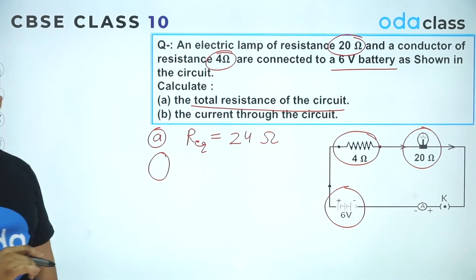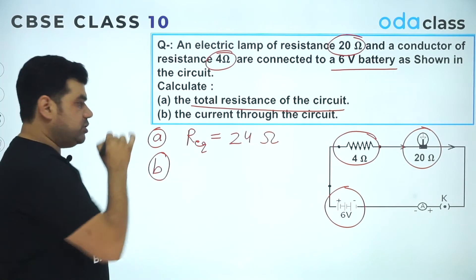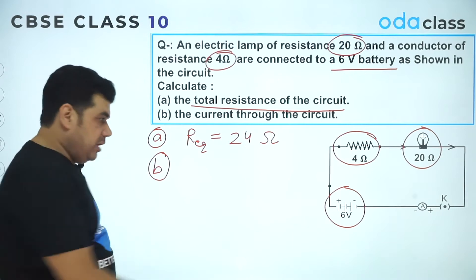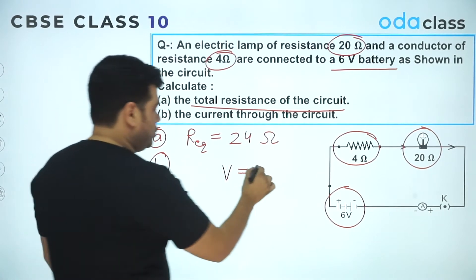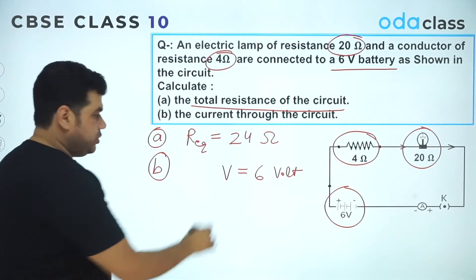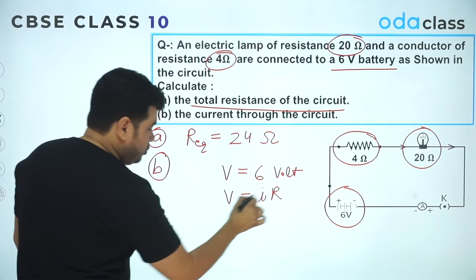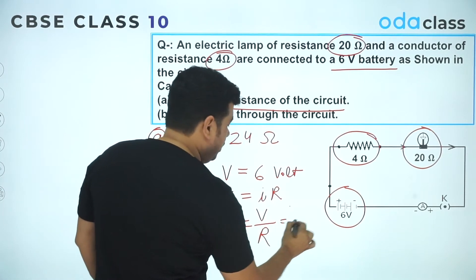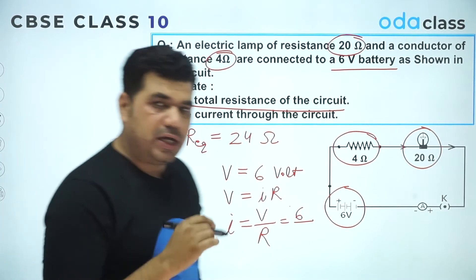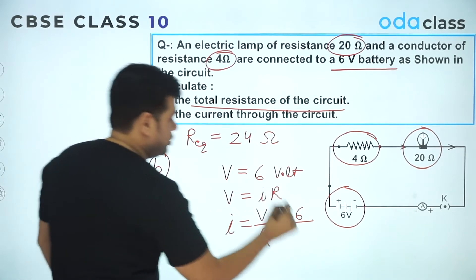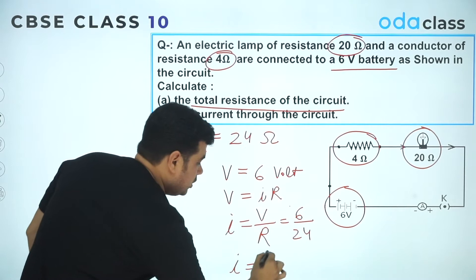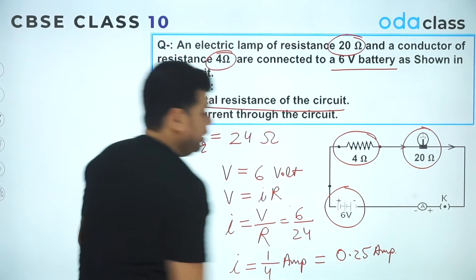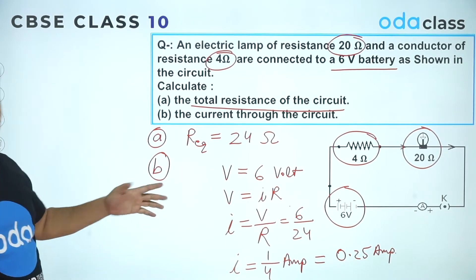For part (b), finding the current through the circuit: we use Ohm's Law because we know the equivalent resistance and the potential difference from the battery, which is 6 volts. Applying V = IR gives I = V/R = 6/24 = 1/4 ampere, or 0.25 ampere. That is the answer to part (b).